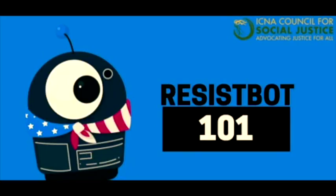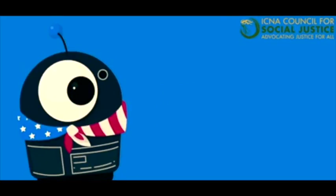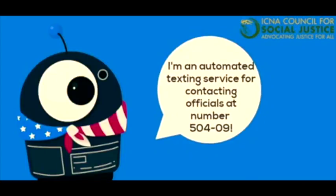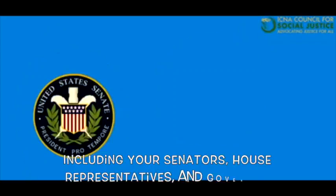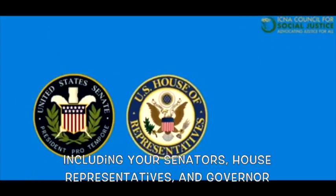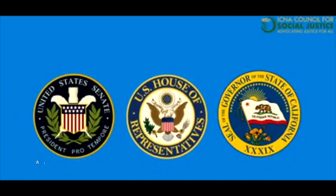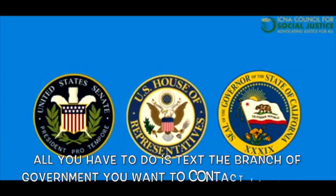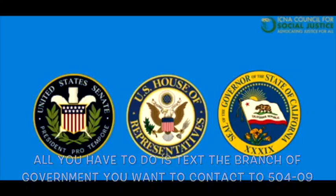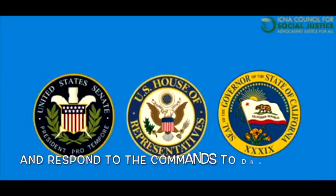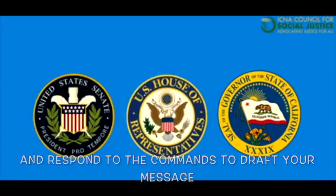So first off, what even is ResistBot? ResistBot is an automated texting service which lets you directly contact your elected officials, including your senators, house representatives, and governor. All you have to do is text the branch of government you want to contact to 50409 and respond to the commands to draft your message.